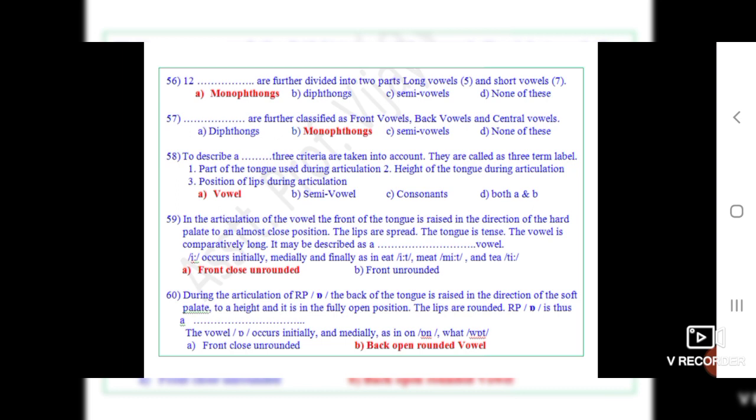Question number 59: In the articulation of the vowel, the front of the tongue is raised in the direction of the hard palate to an almost close position. The lips are spread, the tongue is tight, the vowel is comparatively long. It may be described as a dot dot vowel. The correct option is A, front close and rounded. For example, E occurs initially, medially, and finally as in eat, meat, and tea.